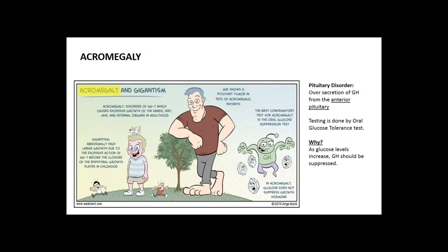The only thing you really need to know about acromegaly: it's a condition predominantly seen when a pituitary tumor affects a person in adulthood, versus when somebody is a child — that is known as gigantism. This is going to be an over-secretion of growth hormone from the anterior pituitary.